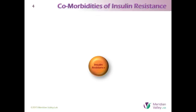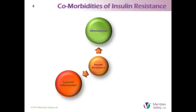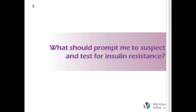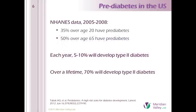Considering the comorbidities of insulin resistance, the presence of atherosclerosis or systemic inflammation should also raise our index of suspicion, as well as imbalances in sex hormones, especially among men and to a lesser degree in women. NHANES data tells us that more than a third of adults and half of those over 65 have prediabetes, and 70 percent of those people will progress to full-blown diabetes if things keep progressing.